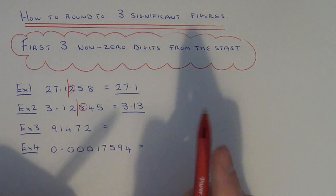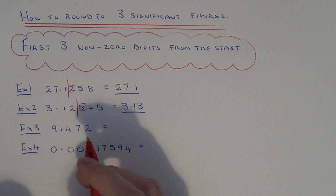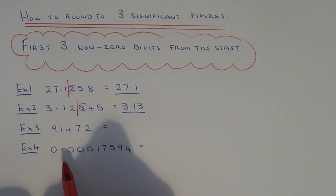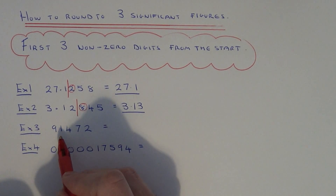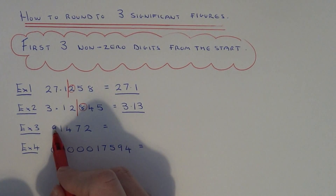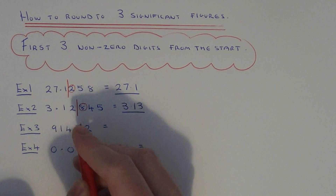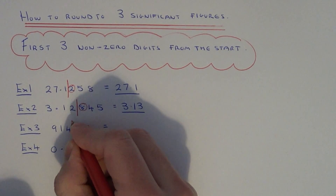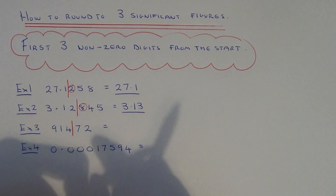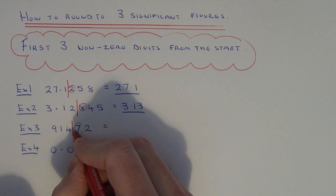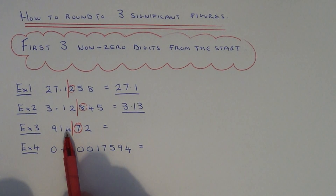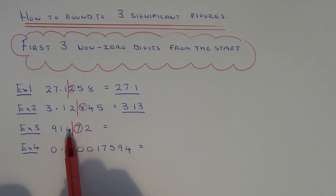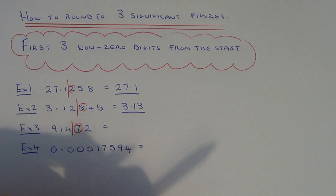Let's move on to example three. We need to round 91,472 to three significant figures. Again we go three numbers from the start of the number — one, two, three — and we're going to round it off here. We look at the number after the line and decide what we round it to, so it would either be 91,400 if we round it down or 91,500 if we round it up.